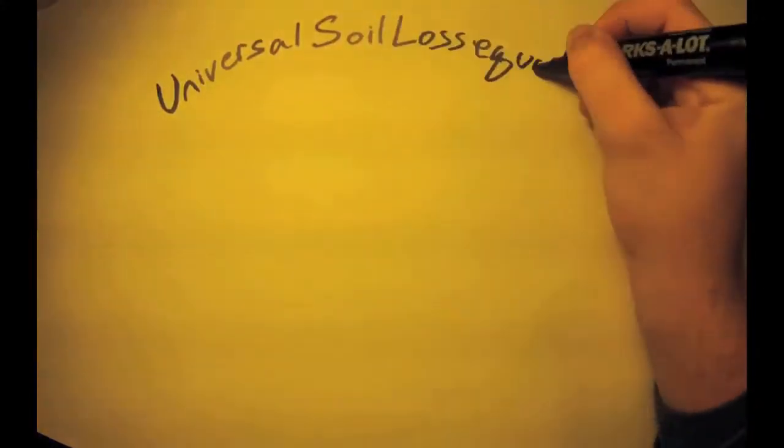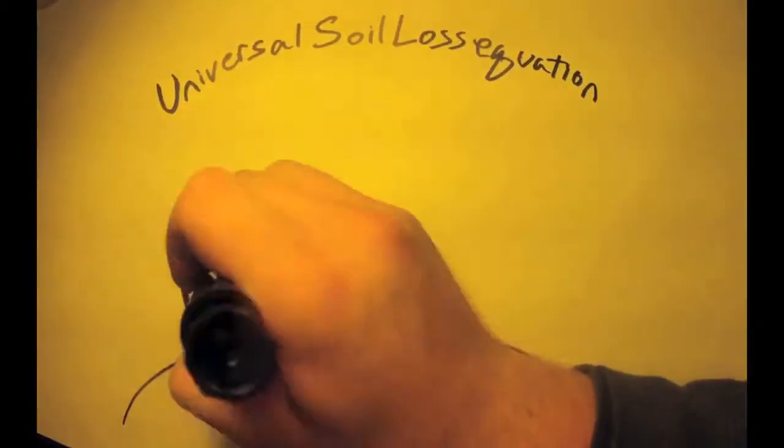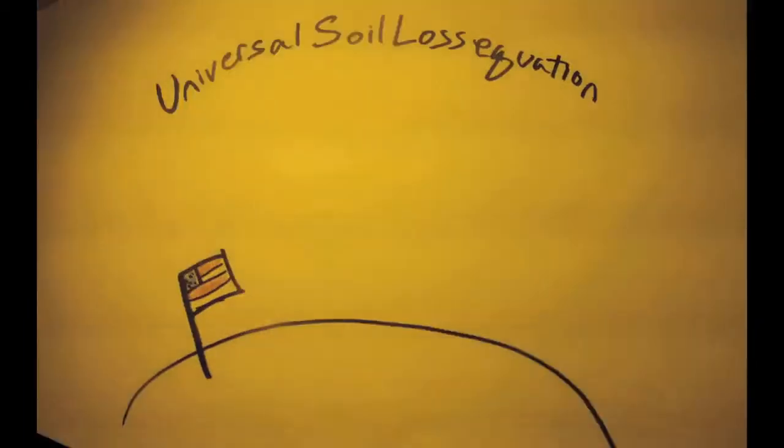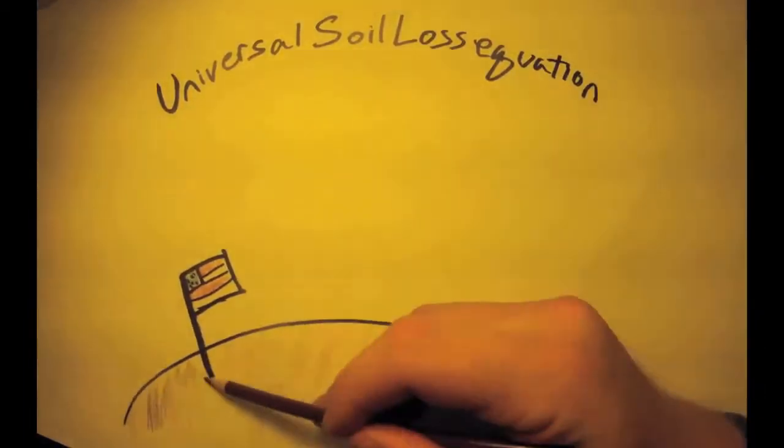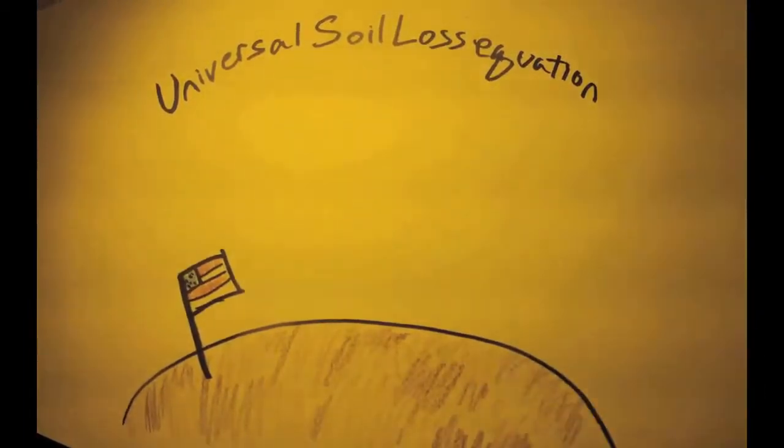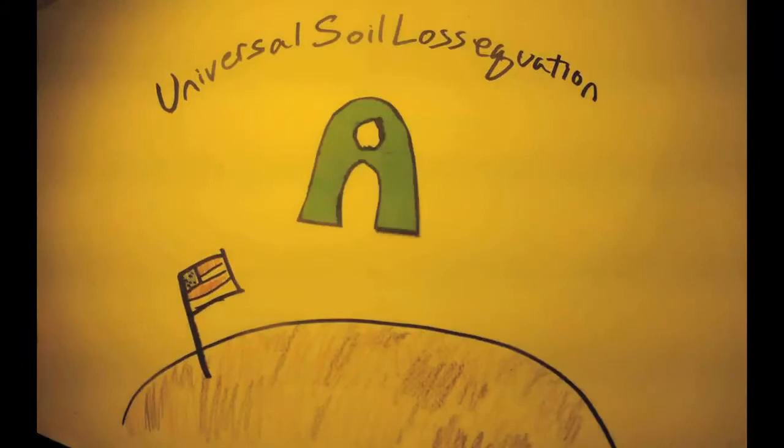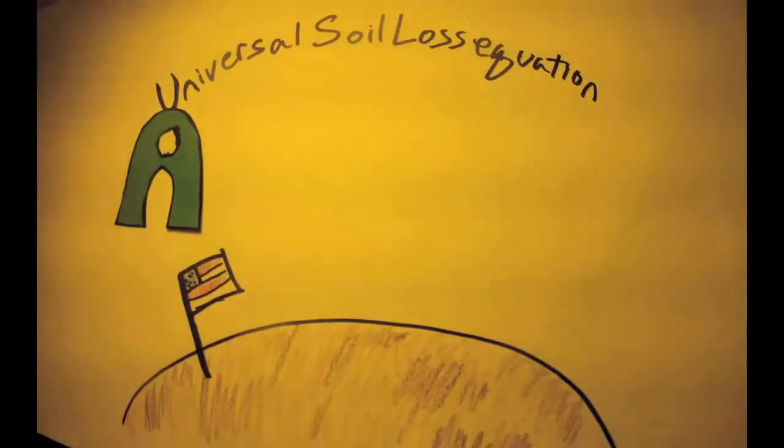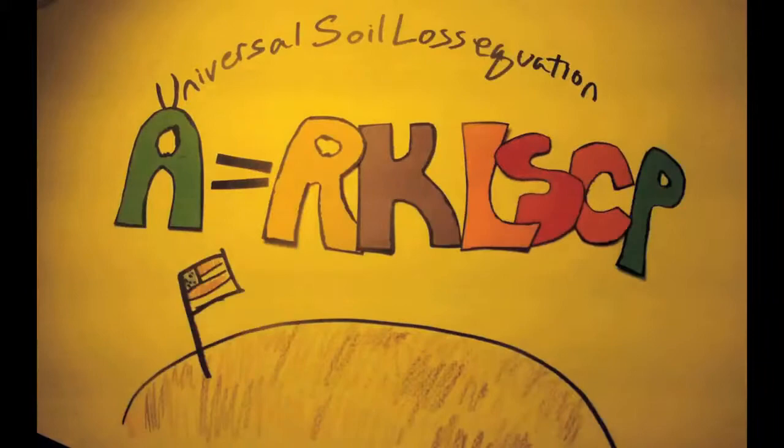The Universal Soil Loss Equation was developed by the USDA Soil Conservation Service in 1965. It was used to estimate average annual rate of soil loss to help landowners improve soil conservation practices. The equation can be described by A equals RKLSCP.